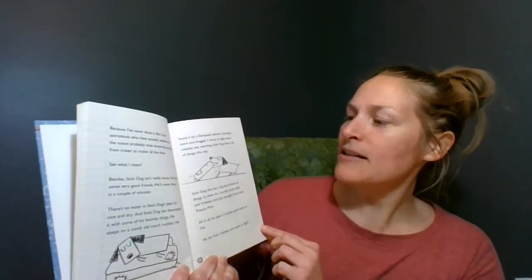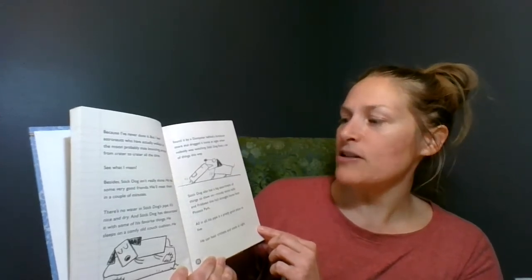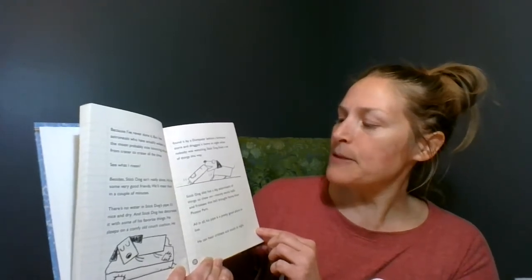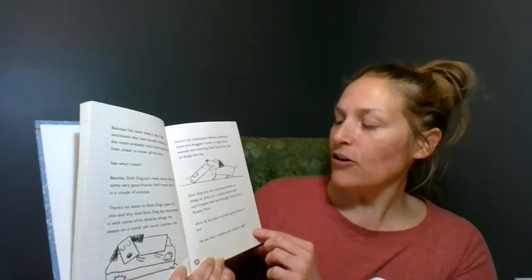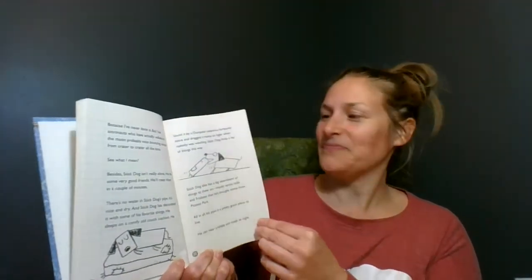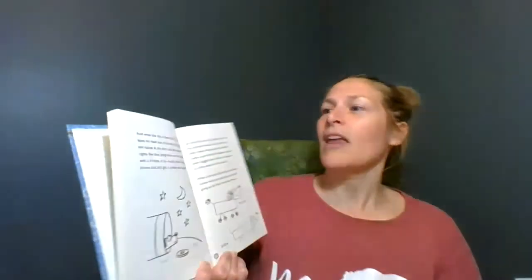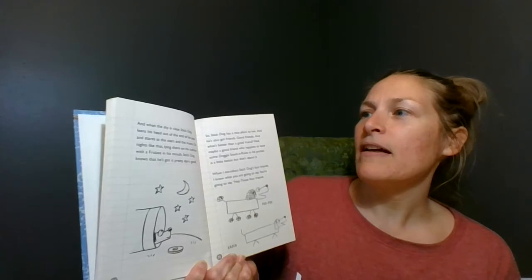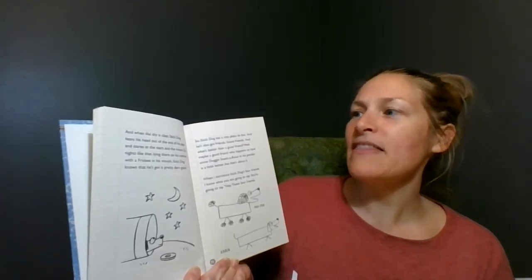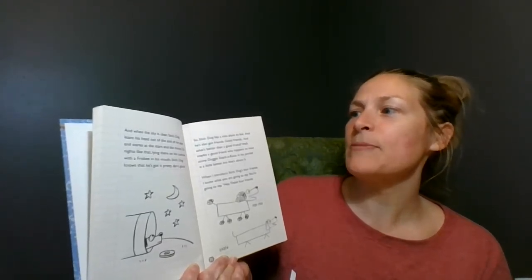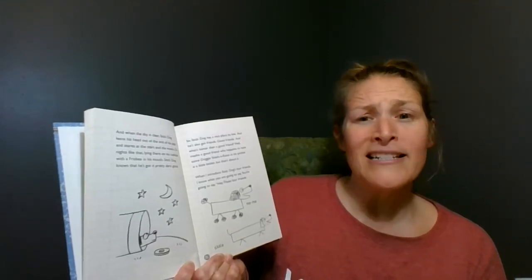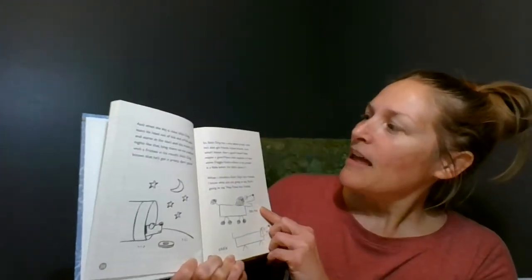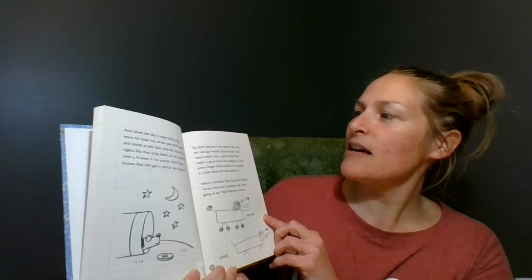There's no water in Stick Dog's pipe. It's nice and dry. And Stick Dog has decorated it with some of his favorite things. He sleeps on a comfy old couch cushion. He found it in a dumpster behind a furniture store and dragged it home at night when nobody was watching. Stick Dog finds a lot of things that way.